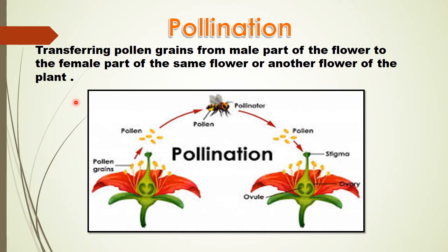Insects feed on the nectar of a flower. While feeding, pollen grains from the anther get stuck to the insect's body, and then the insects move to the stigma of a similar or another flower. The pollen grains fall on the stigma. In this way, the transfer of pollen grains from the anther to the stigma is called pollination. Insects are the main agents of pollination.